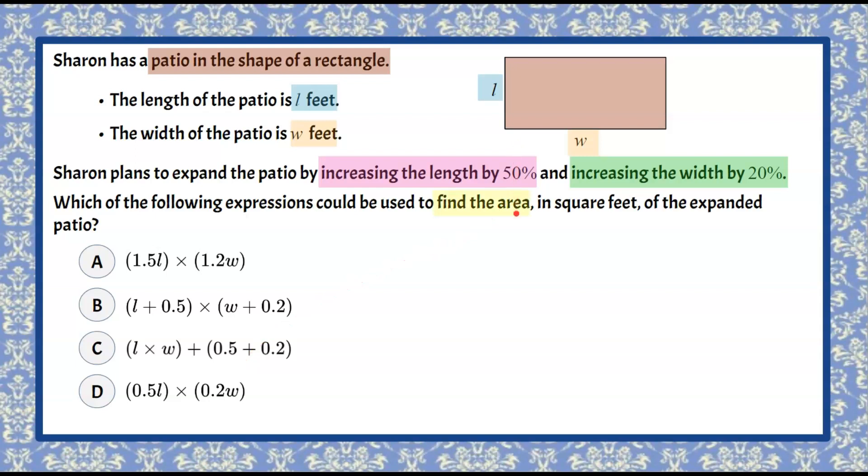So here we need to understand that to find area of a rectangle, we're going to do length times width. So now we need to replace L and understand how L is changing when we increase it by 50%. So we know that we're going to have L.